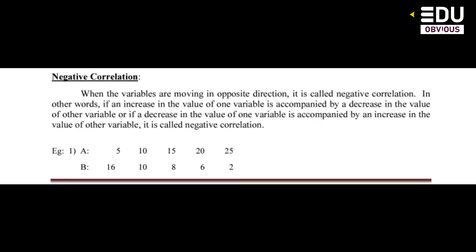What is negative correlation? Negative correlation means when the variables are moving in opposite directions. If an increase in one variable is accompanied by a decrease in another variable, or if a decrease in one variable is accompanied by an increase in the other variable, it is called negative correlation.